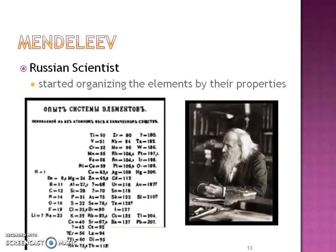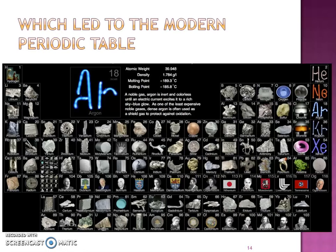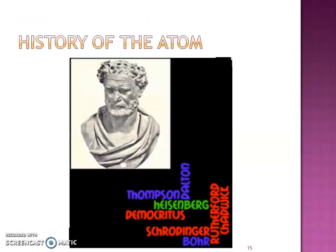He talked about Mendeleev, who was a Russian scientist and was actually the first one to start organizing the properties of elements, which came to the modern periodic table we know today. He talked about the history of the atom, and there are so many scientists involved. The ones in your notes are the important ones, but this was a nice preview of all these different scientists and how they all played a part in understanding what the atom is.